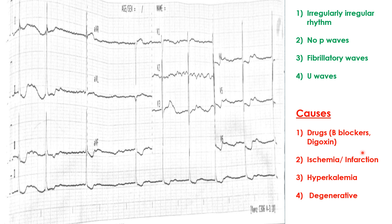The most important and interesting part in this case is that mostly we have seen that atrial fibrillation is a faster rhythm — the atrial rate is around 400 to 600 beats per minute. But the ventricular rates here are not that fast. So what is happening? Why are the fibrillatory waves not conducting down into the ventricles? These are the causes that can be associated with this slowness of the ventricular rate. Always try to find out whether it is one of these causes.